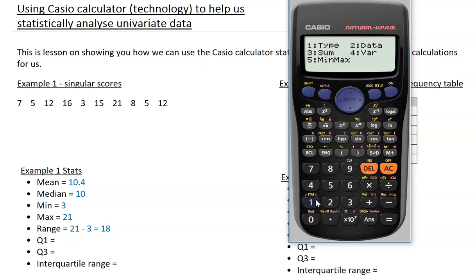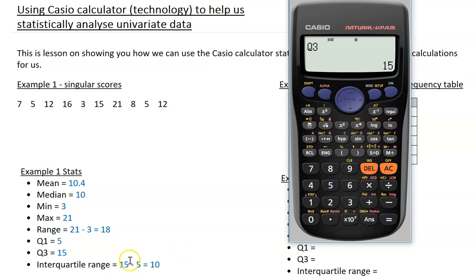The next thing we want to find is the Q1 and Q3. So again go to option 5, Q1 is option 3, press equals. Q3 is option 5, press equals. And then I can use those values to find our interquartile range, which will end up being 10.